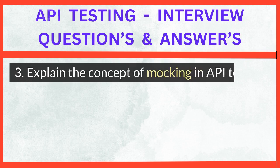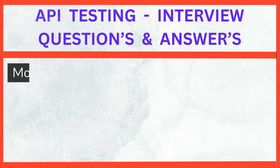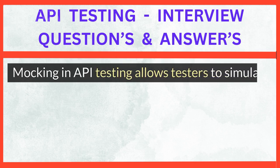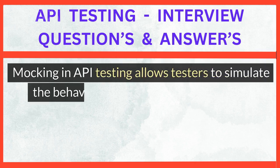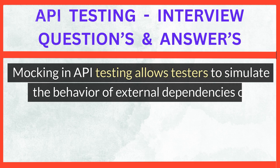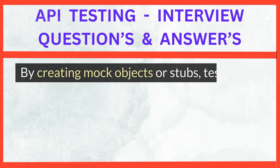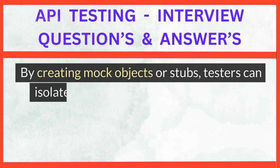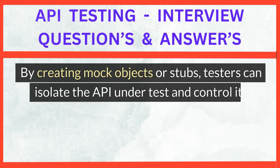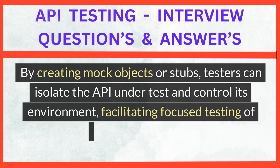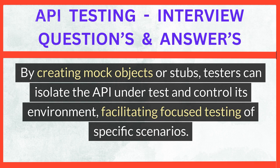Explain the concept of mocking in API testing. Mocking in API testing allows testers to simulate the behavior of external dependencies or services. By creating mock objects or stubs, testers can isolate the API under test and control its environment, facilitating focused testing of specific scenarios.